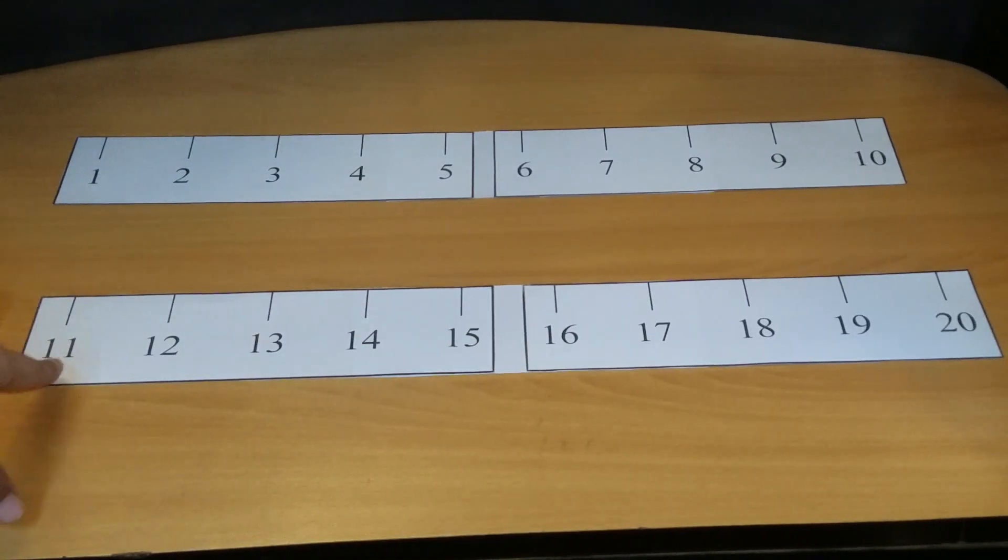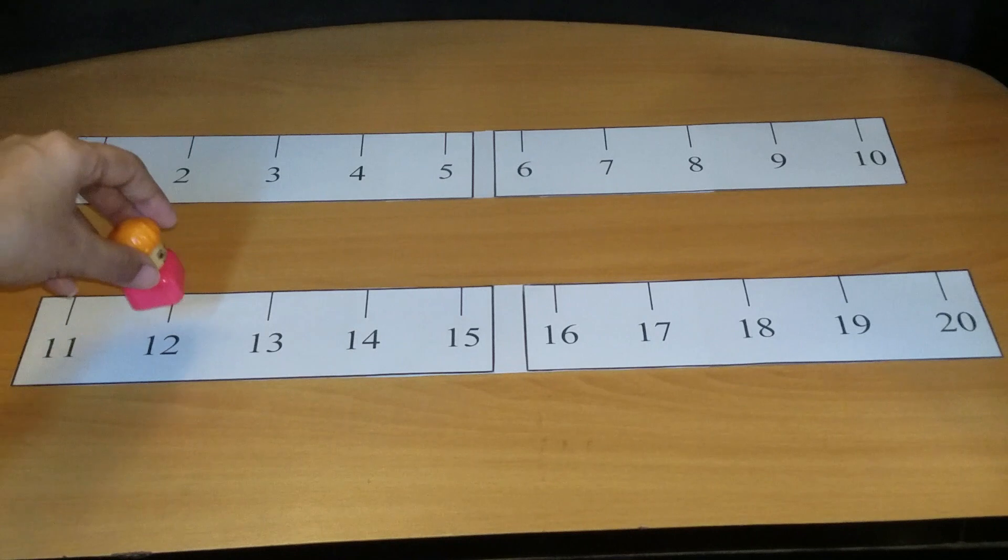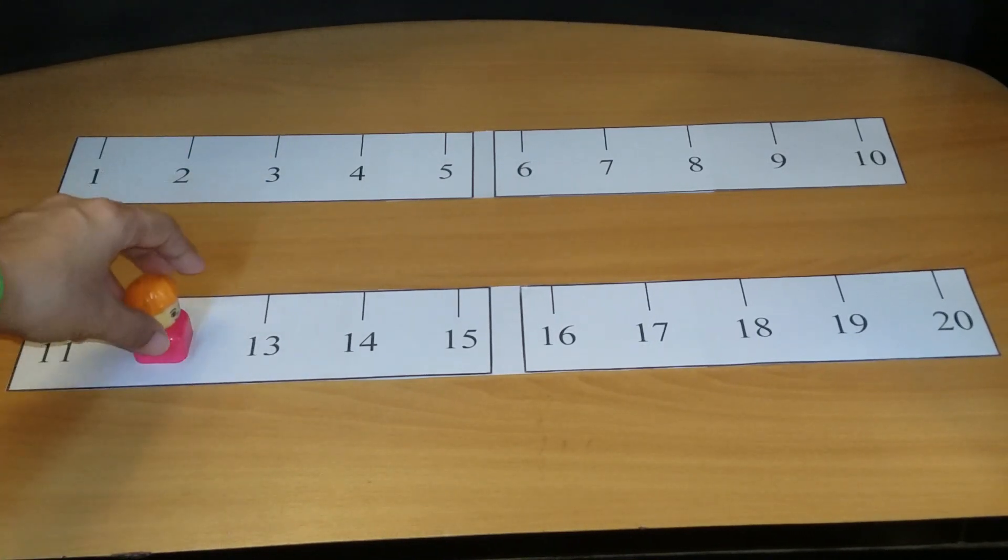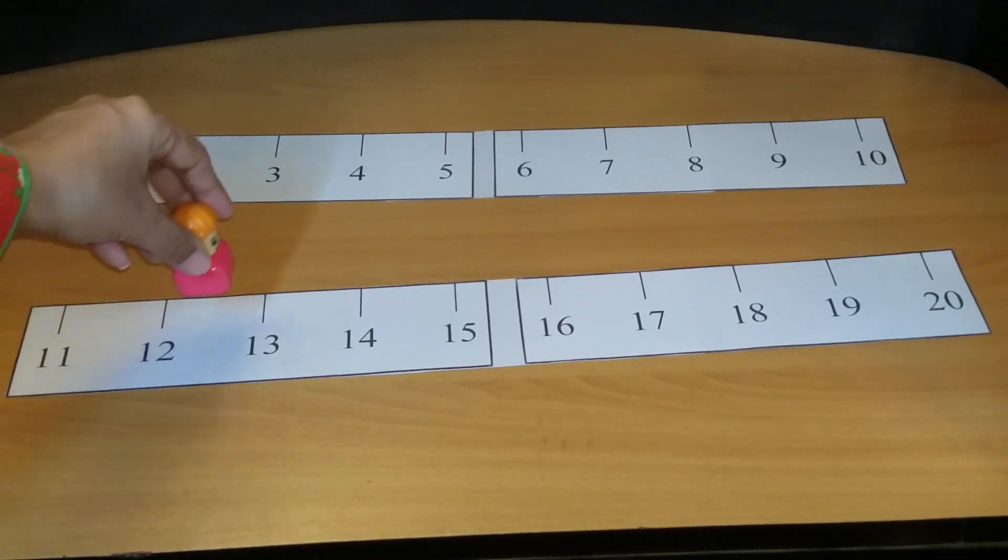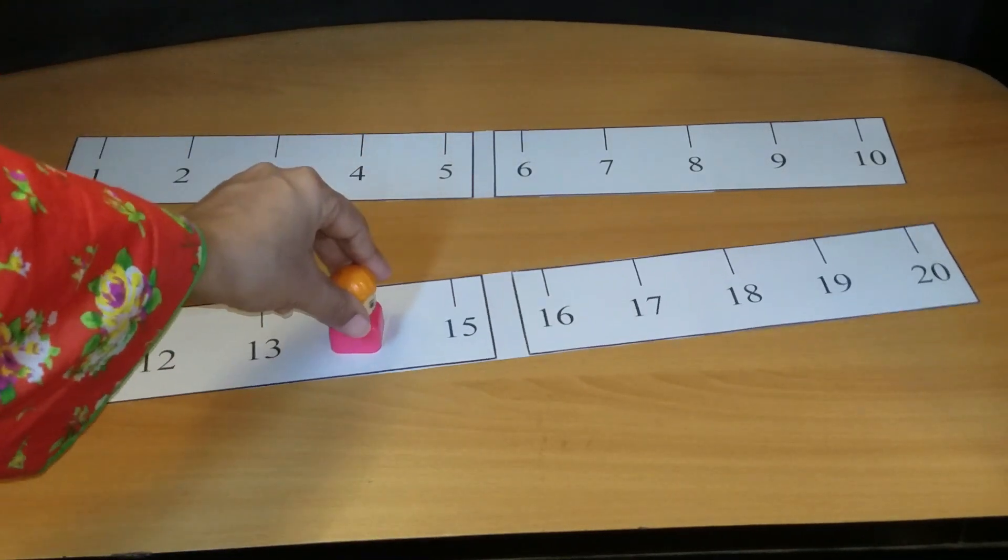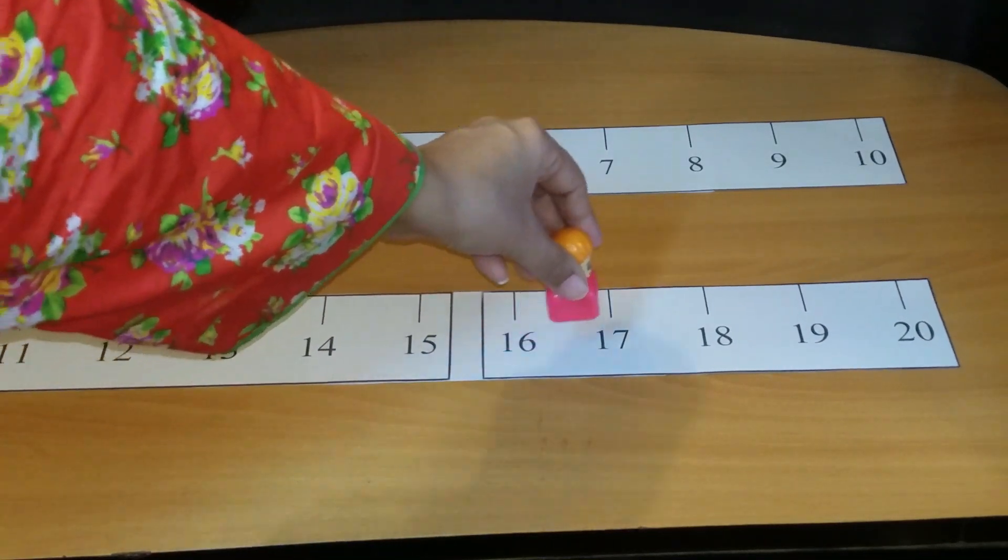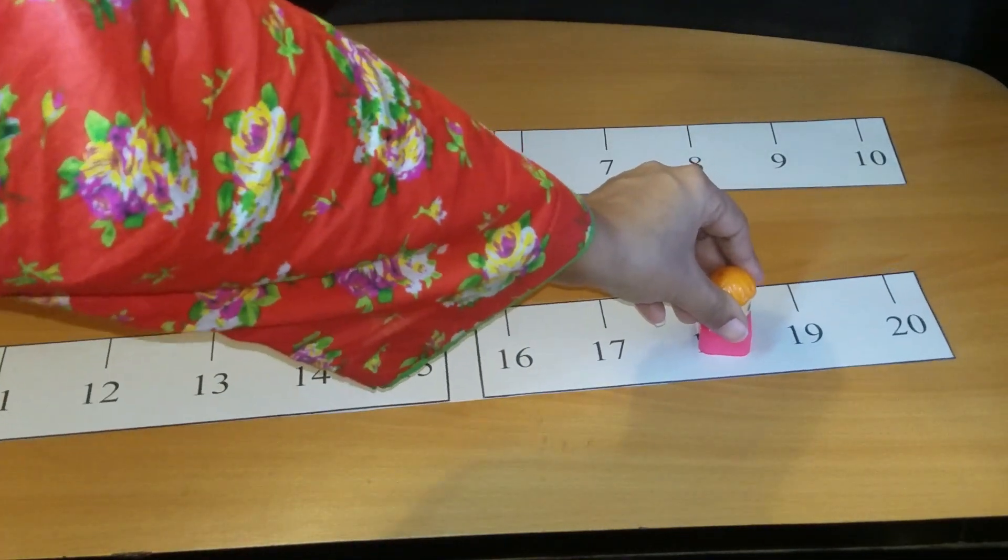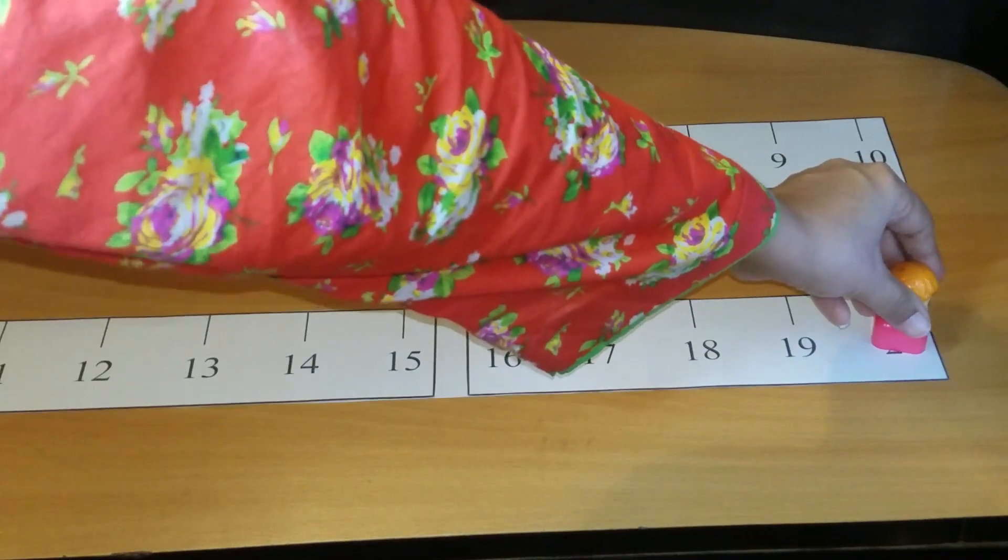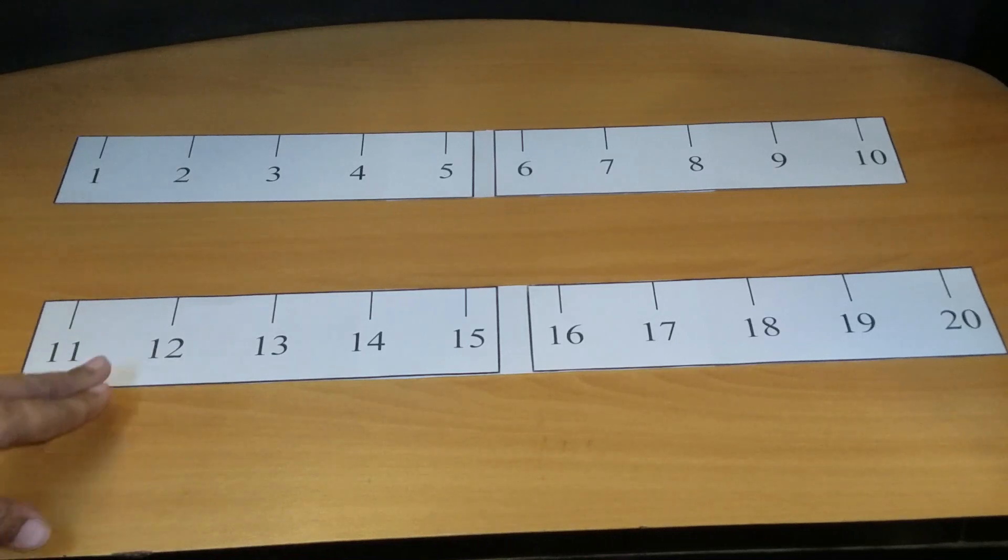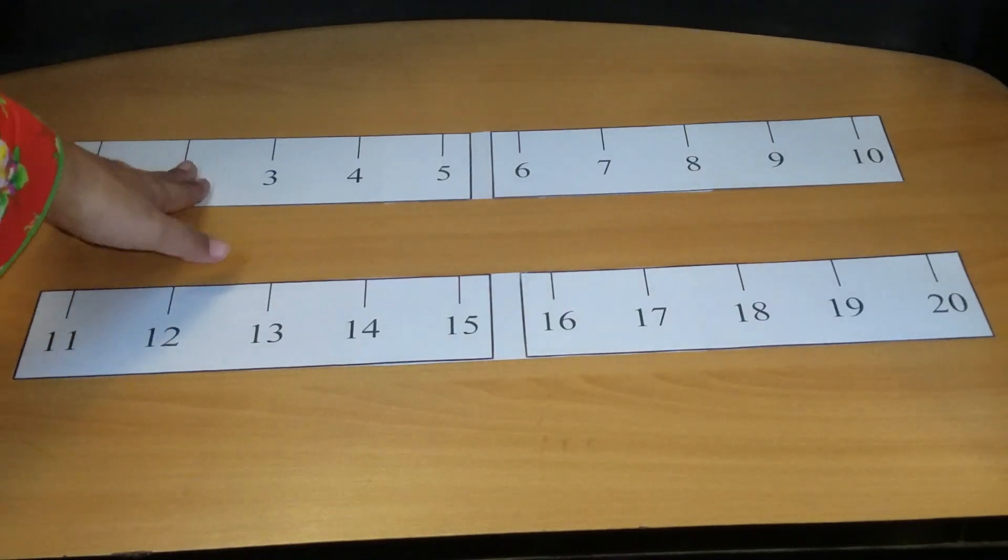Next, here the number line we have is eleven till twenty. So again we will take the toy and we will ask the child to skip the count of two again. Your child will skip one number and he will make the toy jump on the particular number like this.